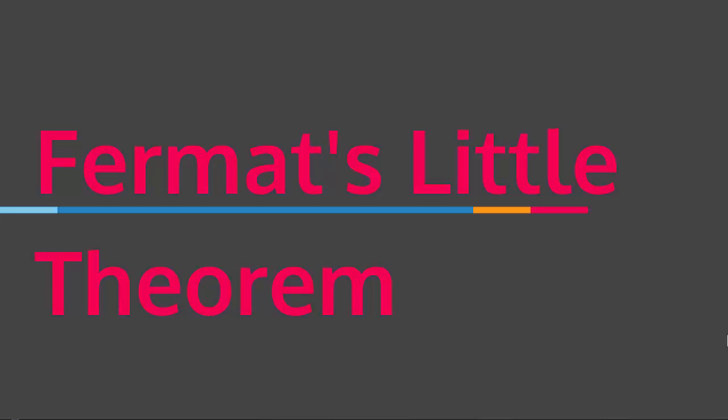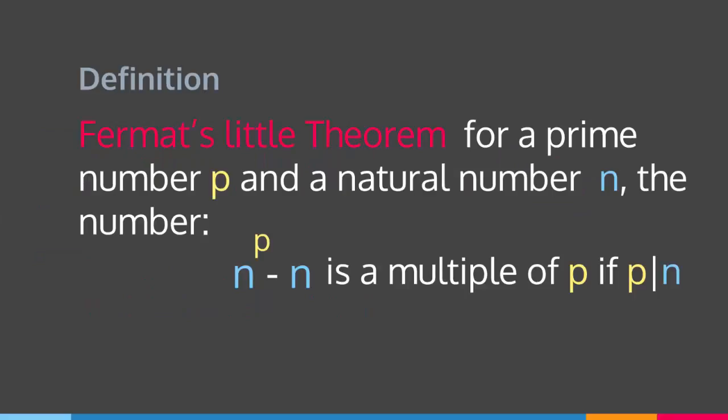So what does Fermat's Little Theorem say? Basically it says that if you have a prime number p and a natural number n, then the result of raising n to the power of p and then subtracting n gives you a number which is a multiple of p, when p divides n.